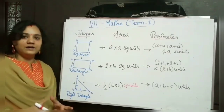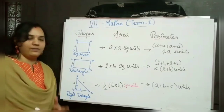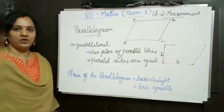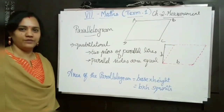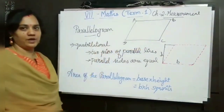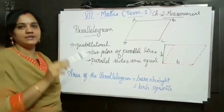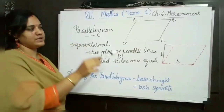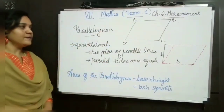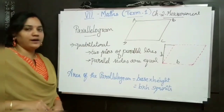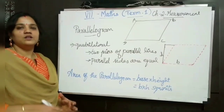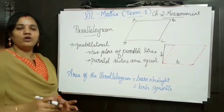Now we are going to see what is a parallelogram and learn its properties. I have drawn one parallelogram with sides AB, BC, CD, and AD — it is a quadrilateral. What is meant by quadrilateral? A quadrilateral is a shape which has four sides.